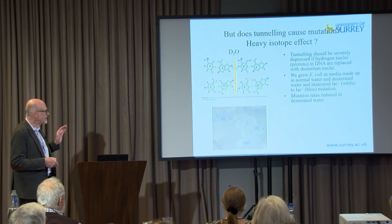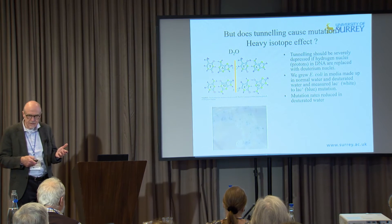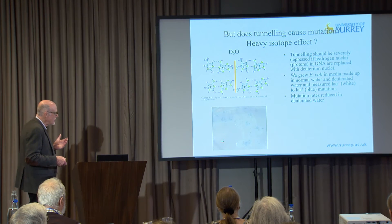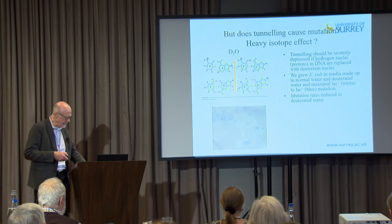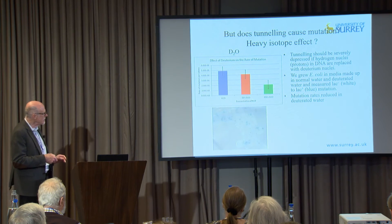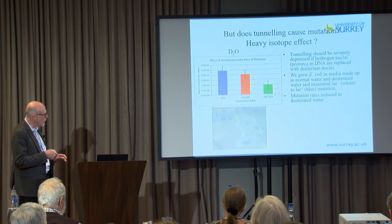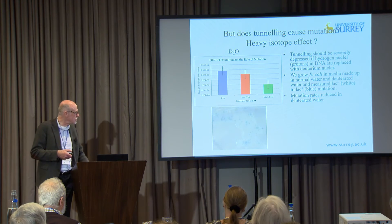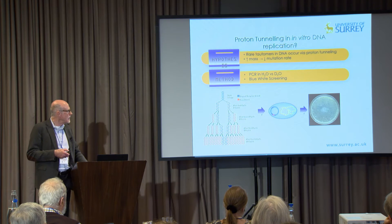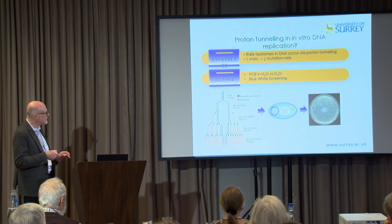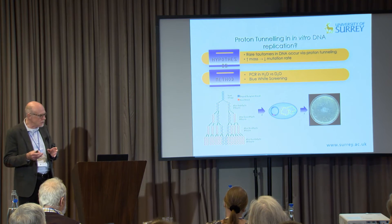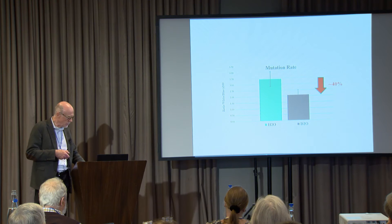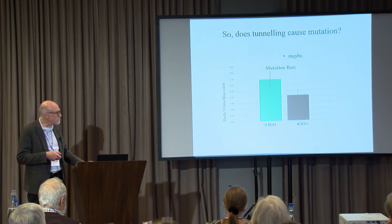I'm an experimentalist, so we looked at whether we could perturb mutation by replacing hydrogen with deuterium - deuterium being twice the mass of a proton, so it tunnels less. We grew E. coli in normal and deuterated water and counted mutants - the blue spots - and found that deuterium reduced the mutation rate, though there were large error bars as there are in most biology experiments. More recently we've done it in vitro using the polymerase chain reaction, just replicating DNA in a test tube, and we get a similar reduction in mutation rate with D2O.